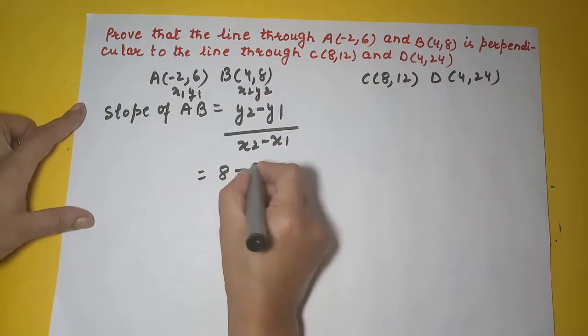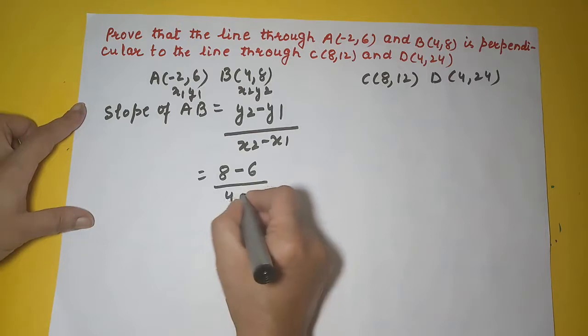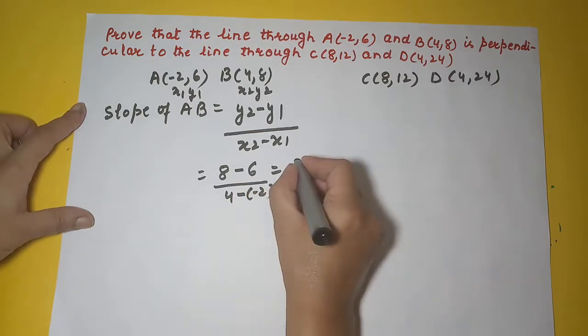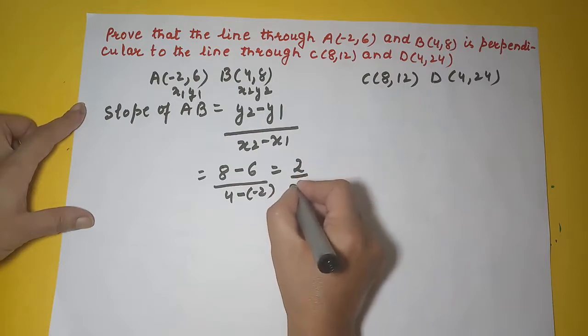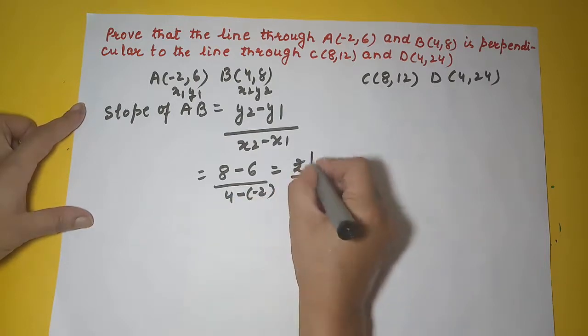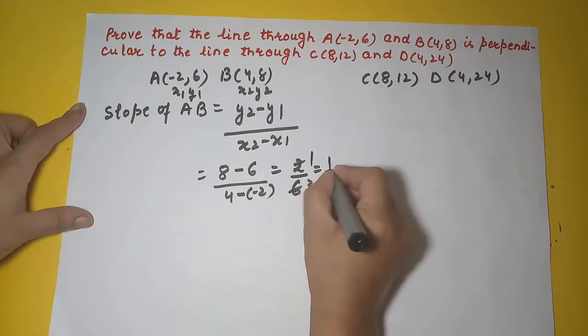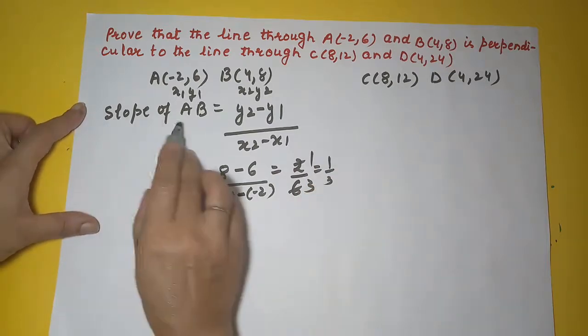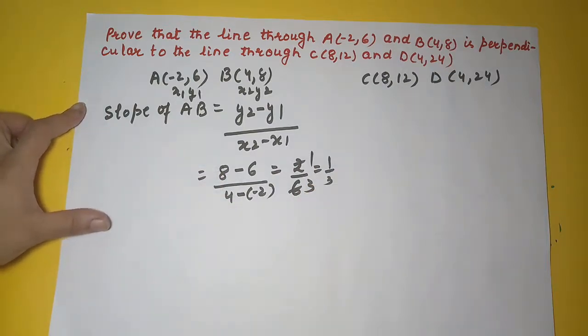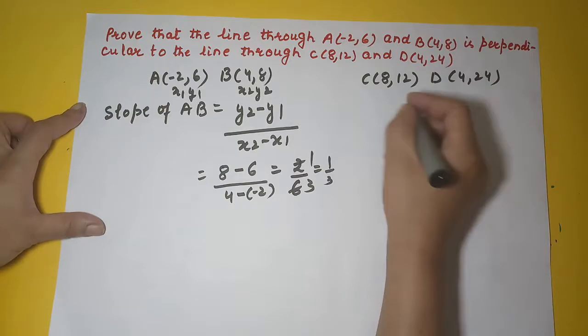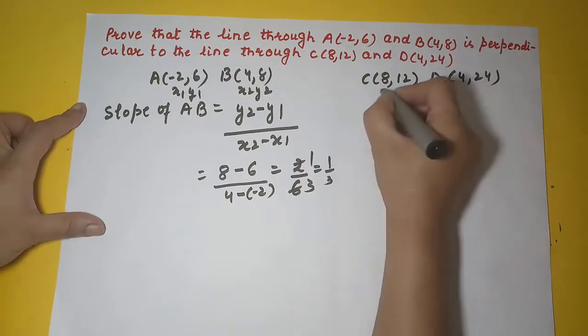y2 is 8 minus 6, 4 minus of minus 2. So that gives me 2 upon 4 plus 2 is 6. So 1 by 3. So I got the slope of AB as 1 upon 3.